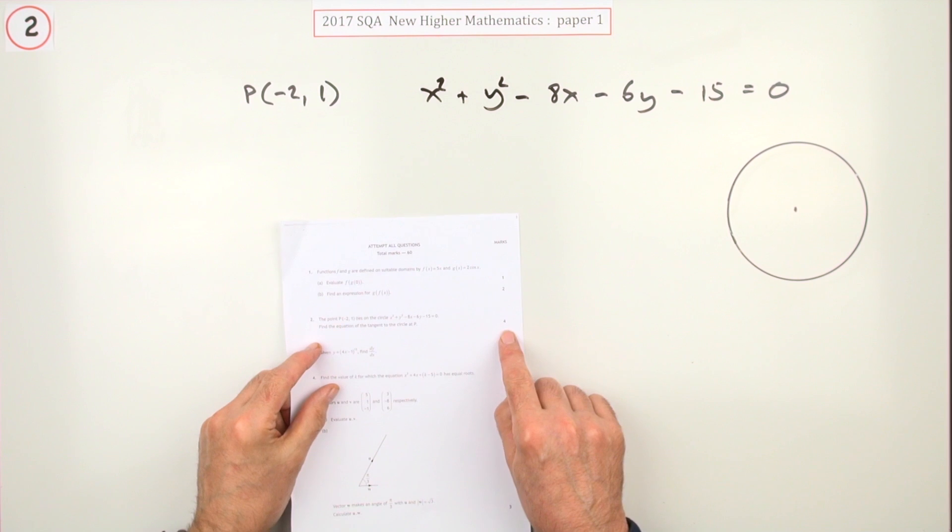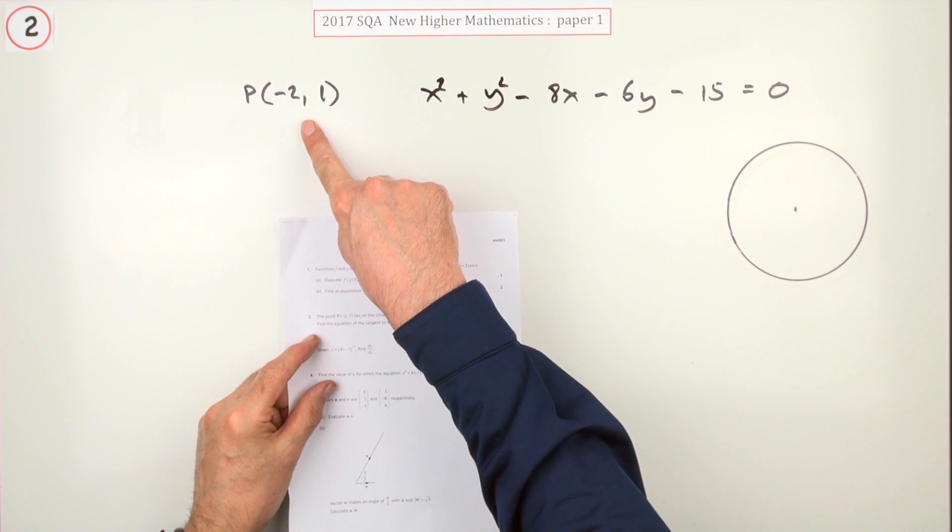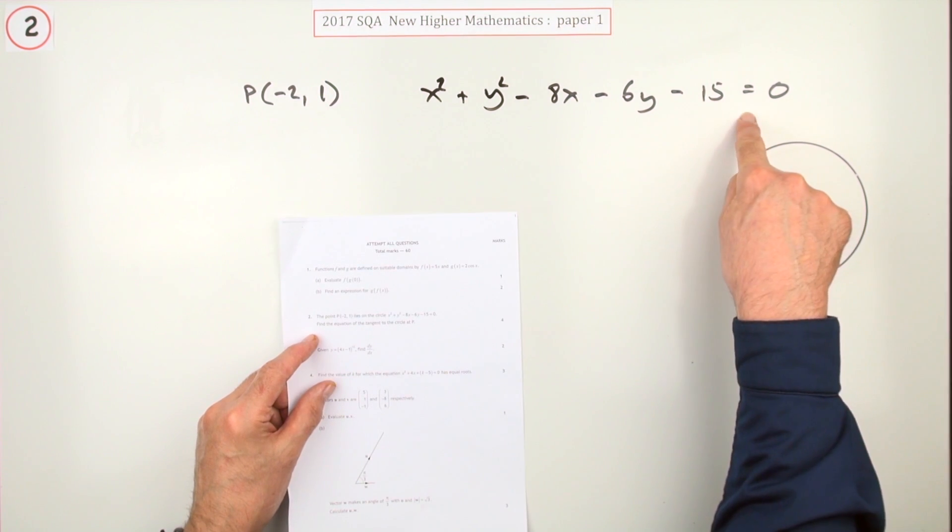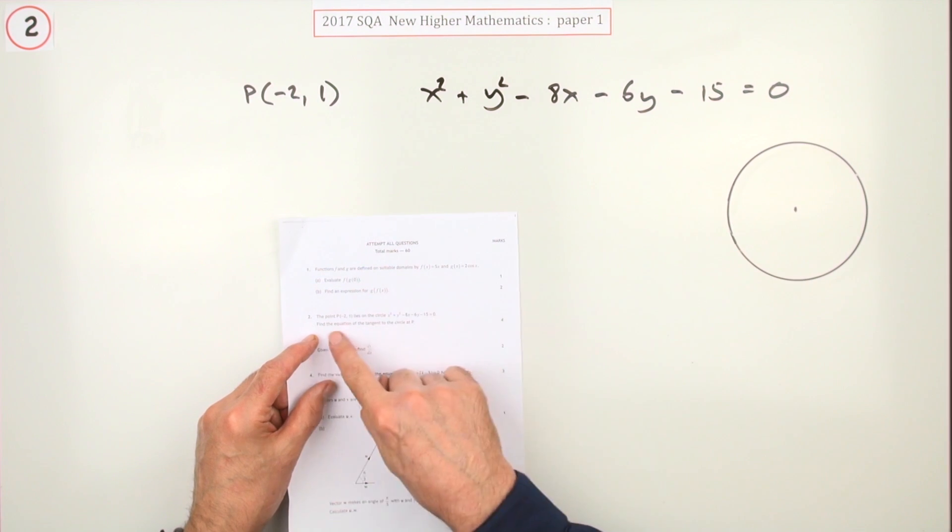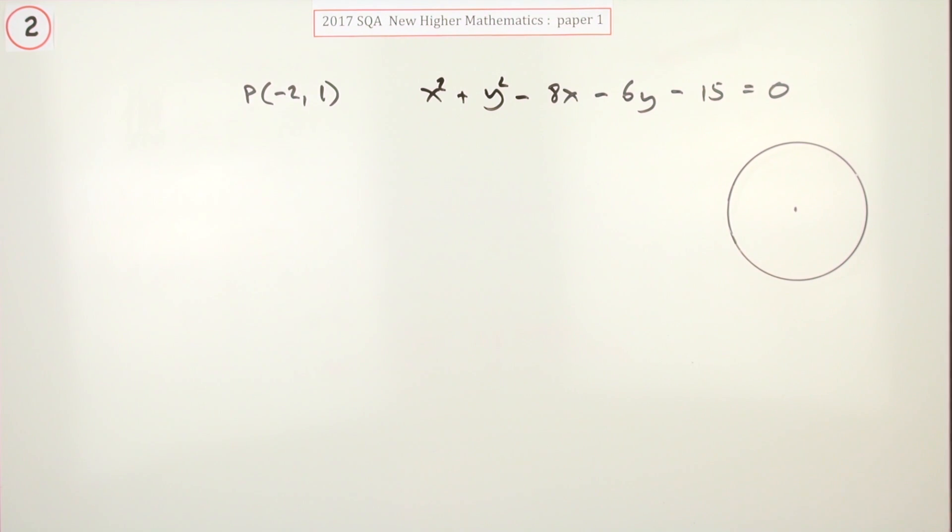Number two, for four marks, circle question here. The point negative two, one lies on the circle with this equation. No picture, don't actually need it. Find the equation of the tangent to the circle at p.